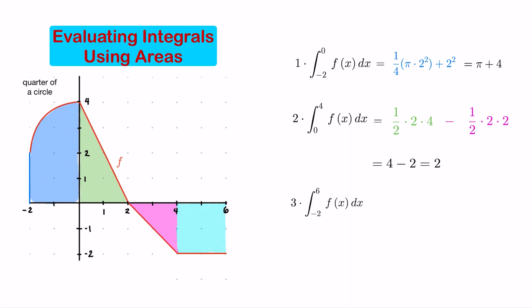Similarly, to evaluate the integral from negative 2 to 6 of f(x) dx, we find the total area of the two regions above the x-axis minus the total area of the two regions below the x-axis.